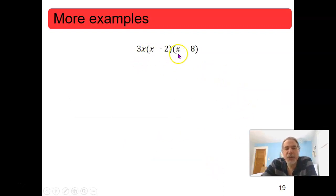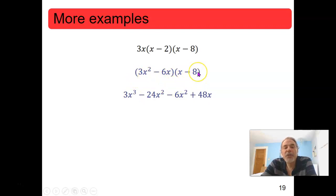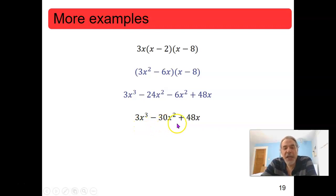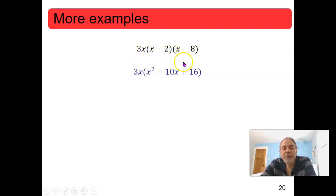For 3x(x − 2)(x − 8), there are three factors, so we can multiply in any convenient order. One approach: first multiply 3x(x − 2) = 3x² − 6x, then multiply that by (x − 8) using FOIL to get 3x³ − 24x² − 6x² + 48x = 3x³ − 30x² + 48x. Alternatively, multiply (x − 2)(x − 8) = x² − 10x + 16 first, then multiply through by 3x to get the same answer.